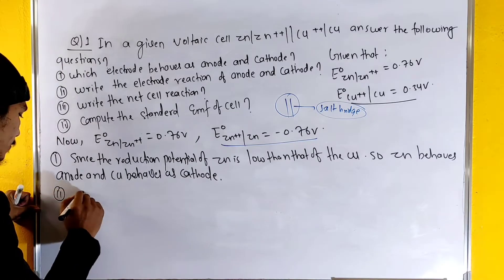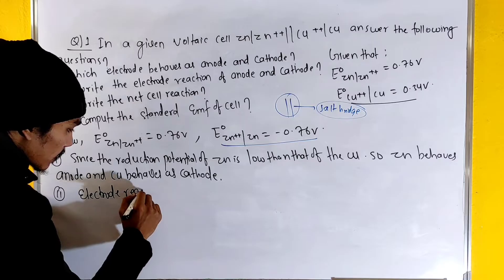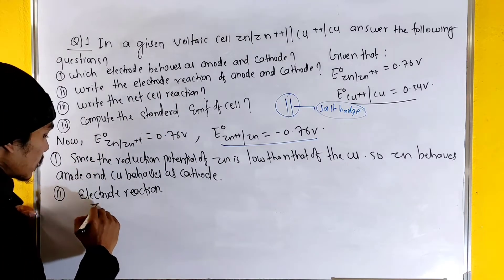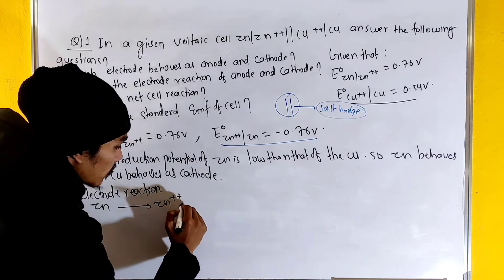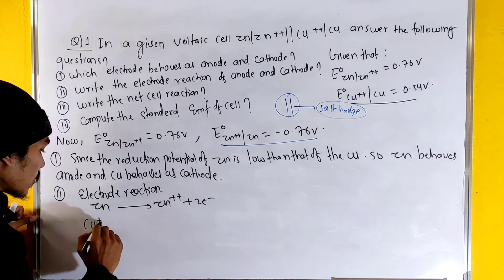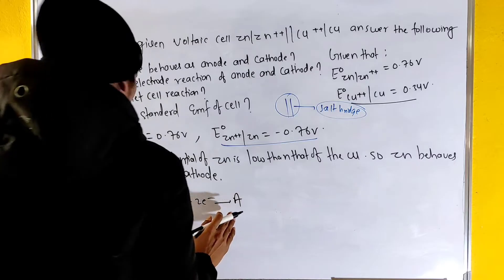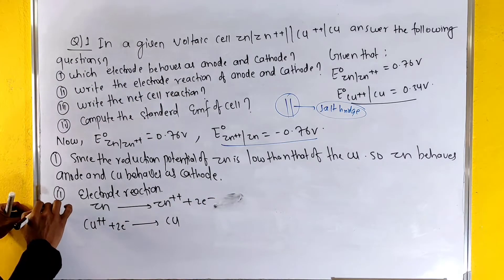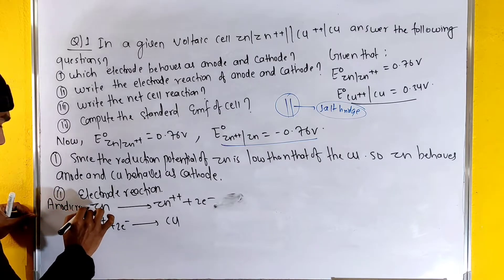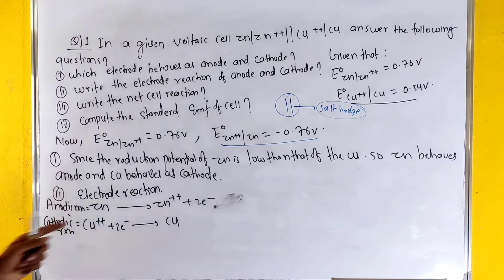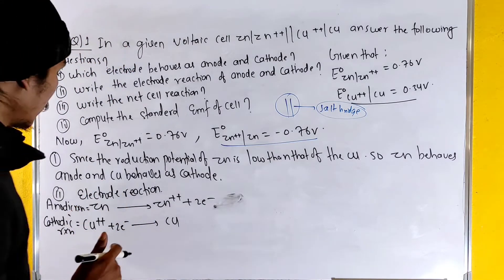Question number 2: Write the electrode reactions. The anodic reaction involves zinc being oxidized. The cathodic reaction involves Cu²⁺ being reduced to copper. This is the example of anodic reaction and cathodic reaction. The net cell reaction can be worked out from these.